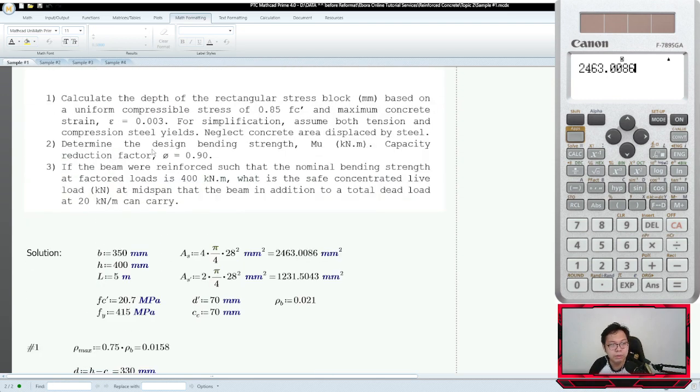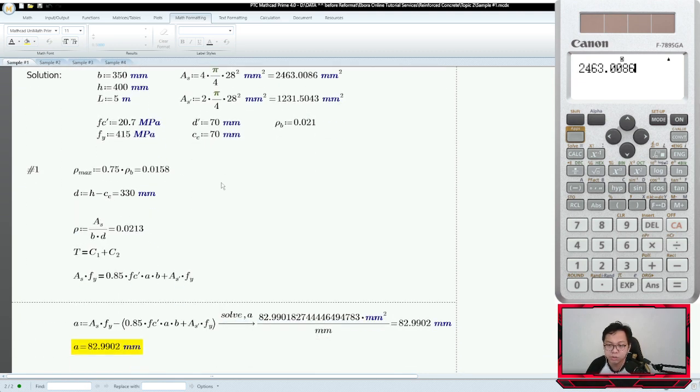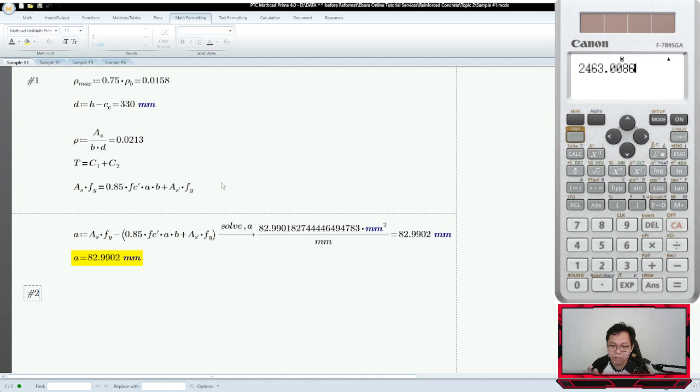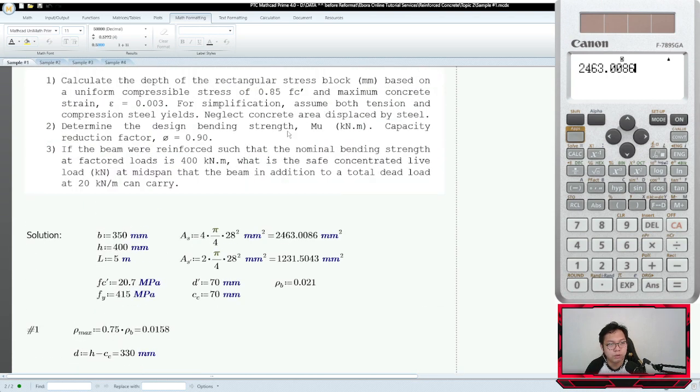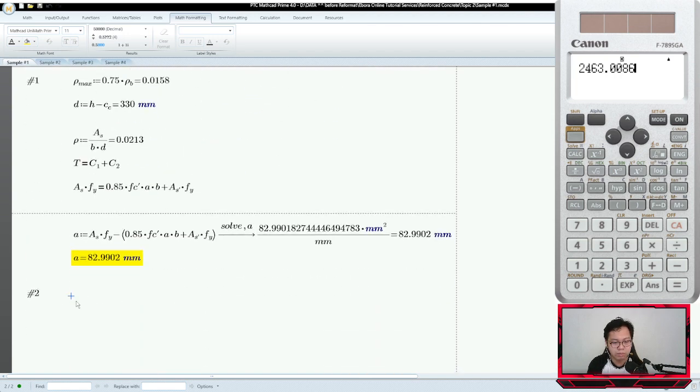Let's solve number two. Question number two: determine the design bending strength MU, capacity reduction factor is 0.9. Again, this is good about the board exam - there are steps we can skip due to the hints or assumptions by the examiner. These assumptions are important so we get the same answer.